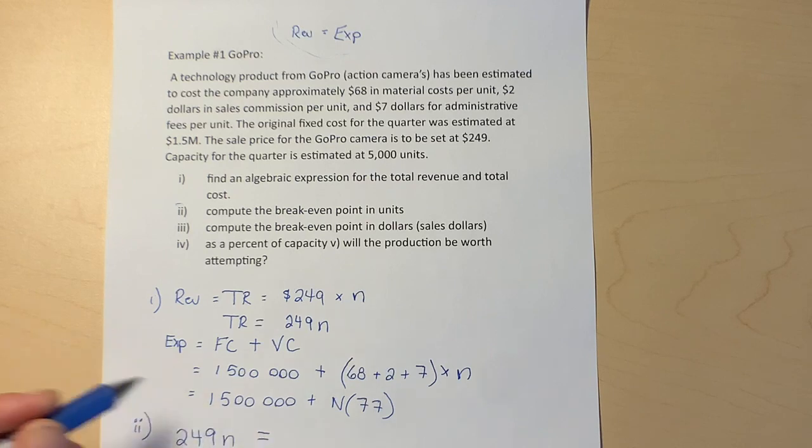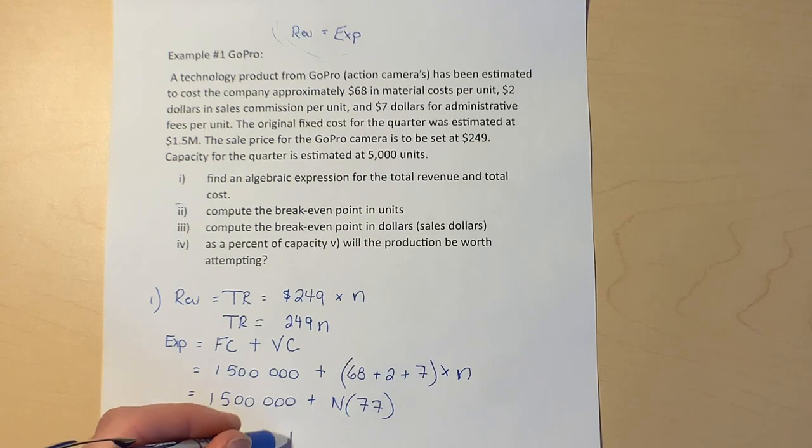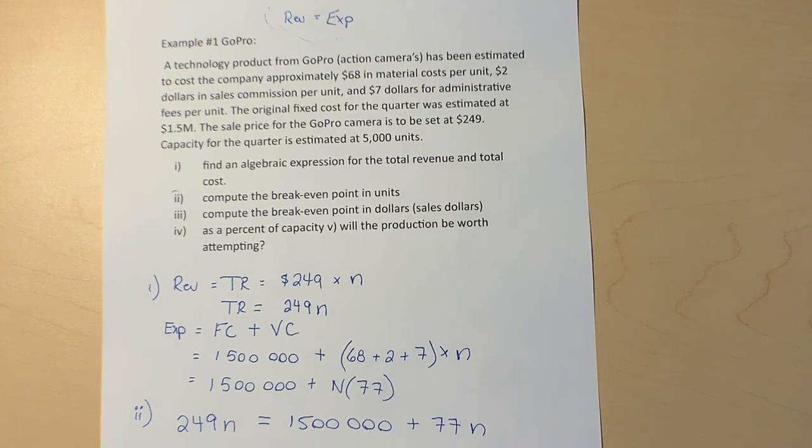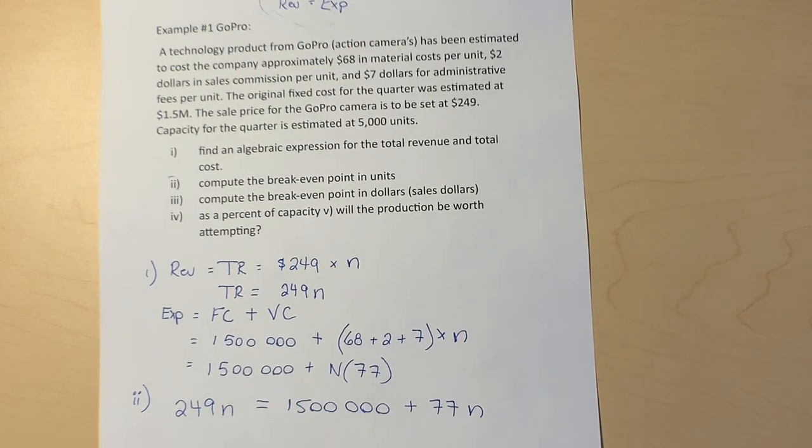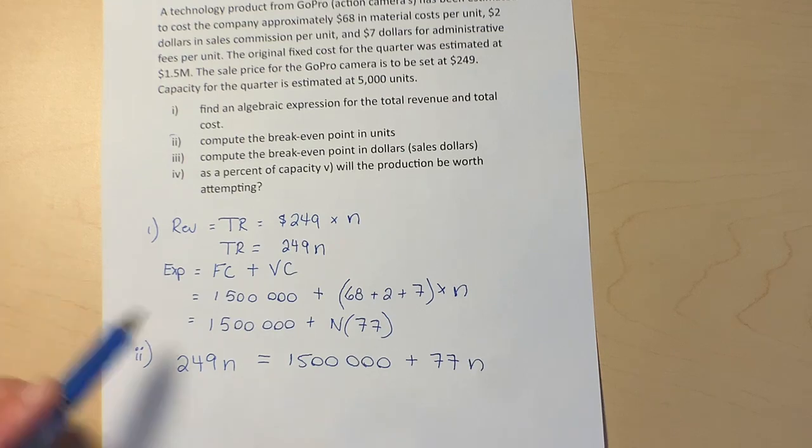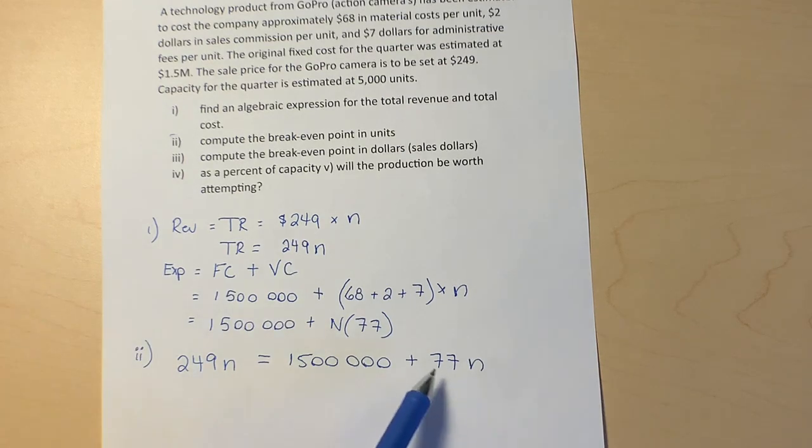And we want that to equal the total expenses of 1.5 million plus 77n. That's our formula for revenue and our formula for expenses. Now we just need to collect like terms and do some algebra to figure this out.